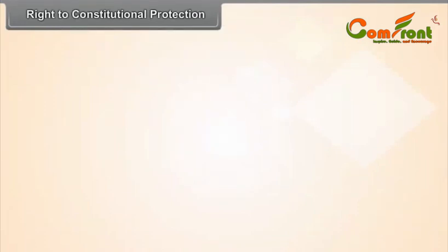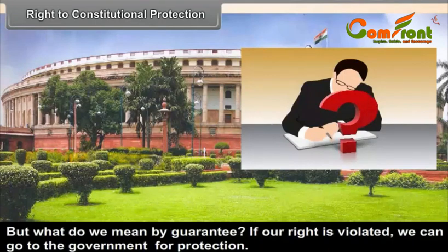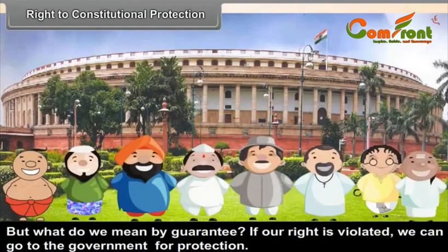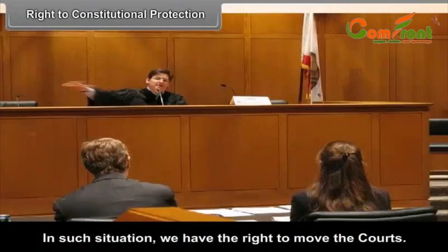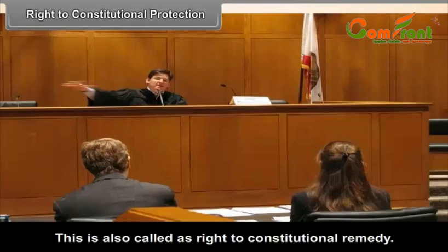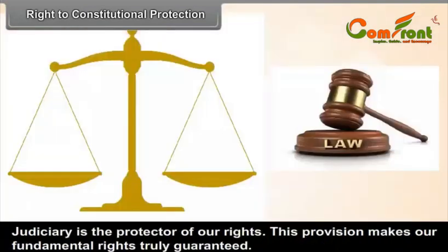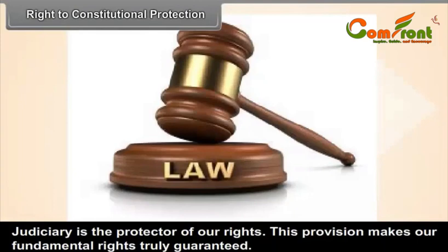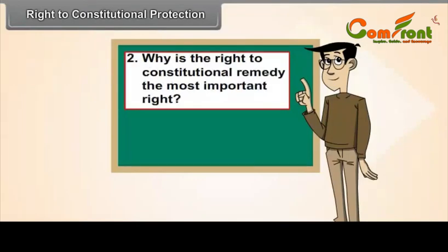Right to Constitutional Protection. We have listed the rights guaranteed by the constitution, but what do we mean by guarantee? If our right is violated, we can go to the government for protection. But what if some officer or the government itself violated our rights? In such a situation, we have the right to move the courts — also called the right to constitutional remedy. The court will decide if the government has wrongly interfered with our rights and, if so, ask the government not to do so. The judiciary is the protector of our rights, and this provision makes our fundamental rights truly guaranteed. The right to equality is important, and the right to constitutional remedy is the most important right.